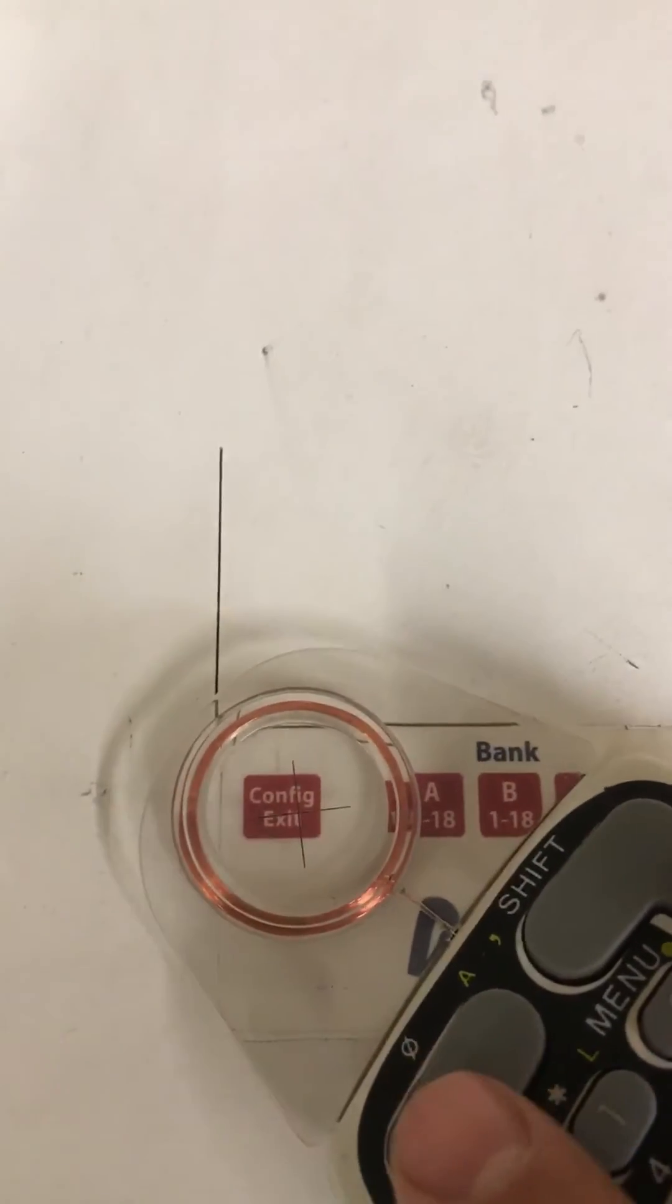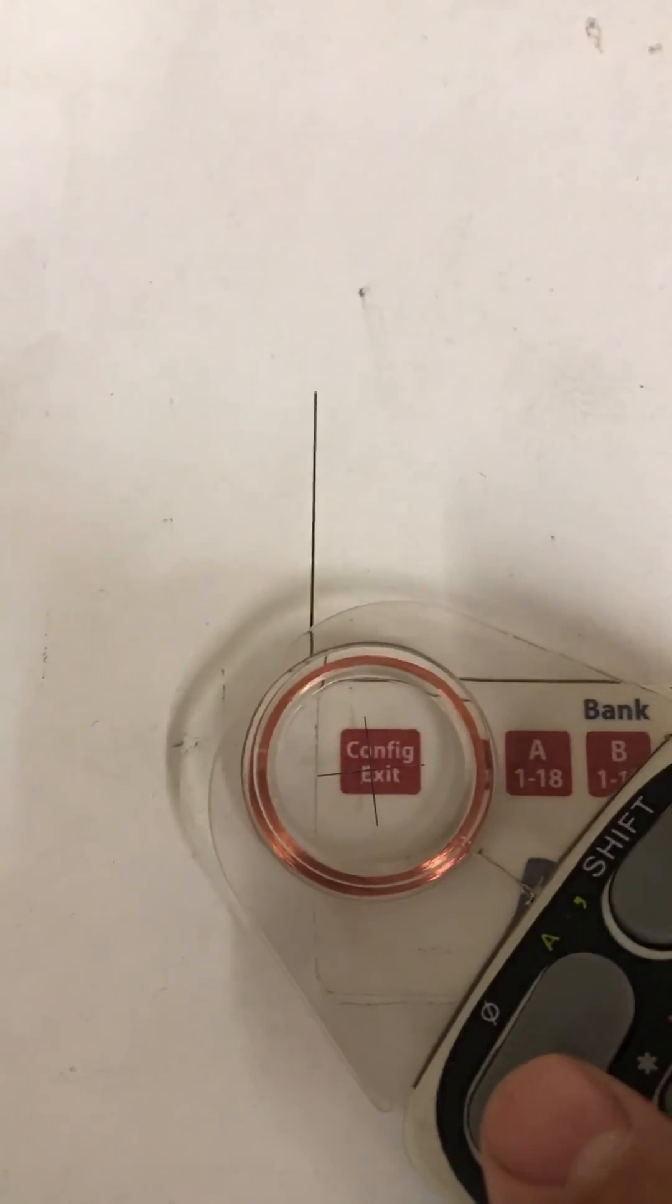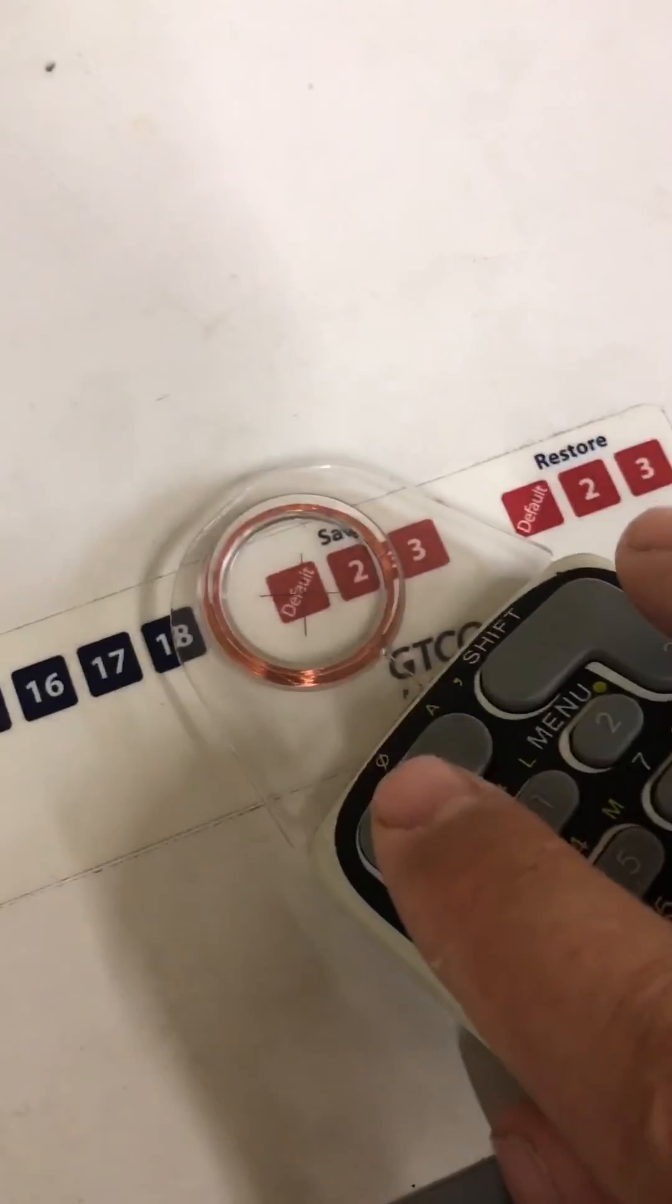And then go to config exit right here. So the order of buttons is config exit once, A once, check the bank codes one to eighteen, push B, check the bank codes one to eighteen, push C, check the bank codes one to eighteen, push default, push exit, and that's it.